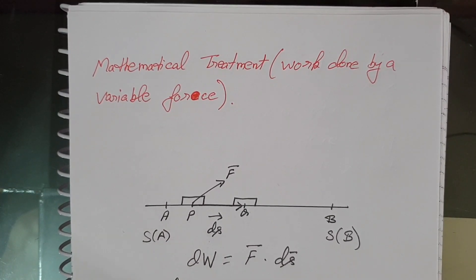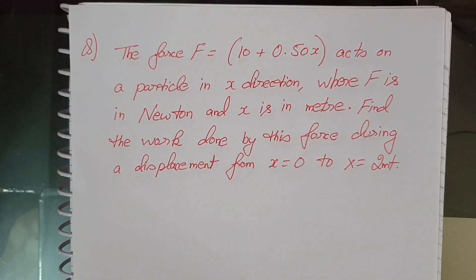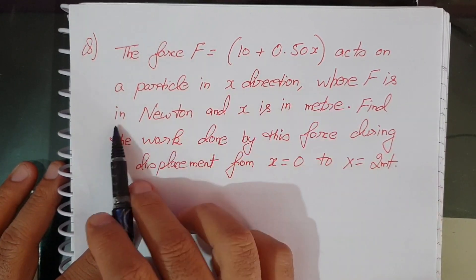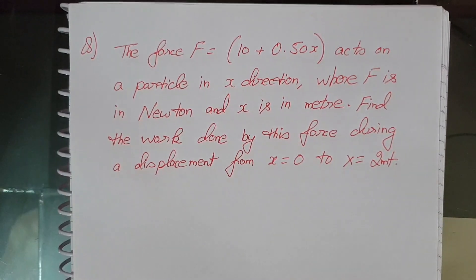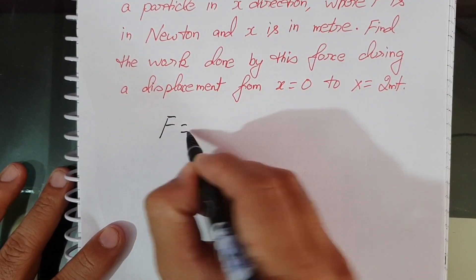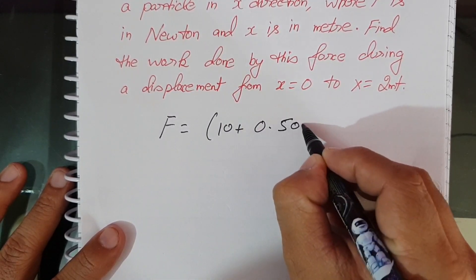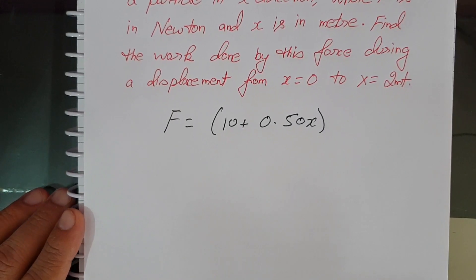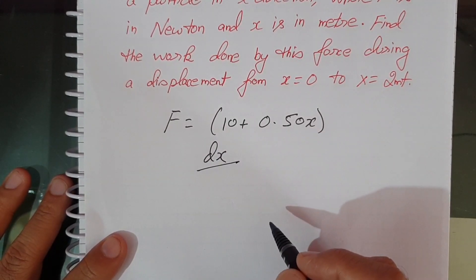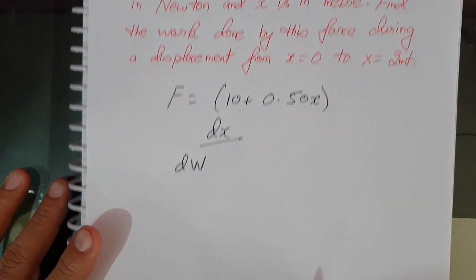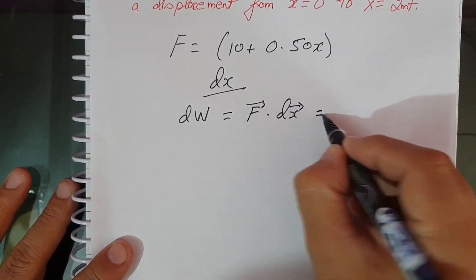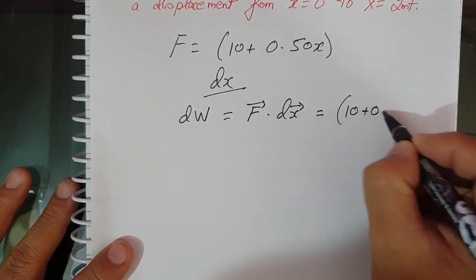Now let's do an illustration. Consider a force F equals 10 plus 0.50x on a particle in the x-direction, where F is in newtons and x is in meters. Find the work done by this force during the displacement from x equals 0 to x equals 2 meters. Here F is given as 10 plus 0.50x, and the small displacement is dx, so dW equals F dot dx, which gives 10 plus 0.50x times dx.